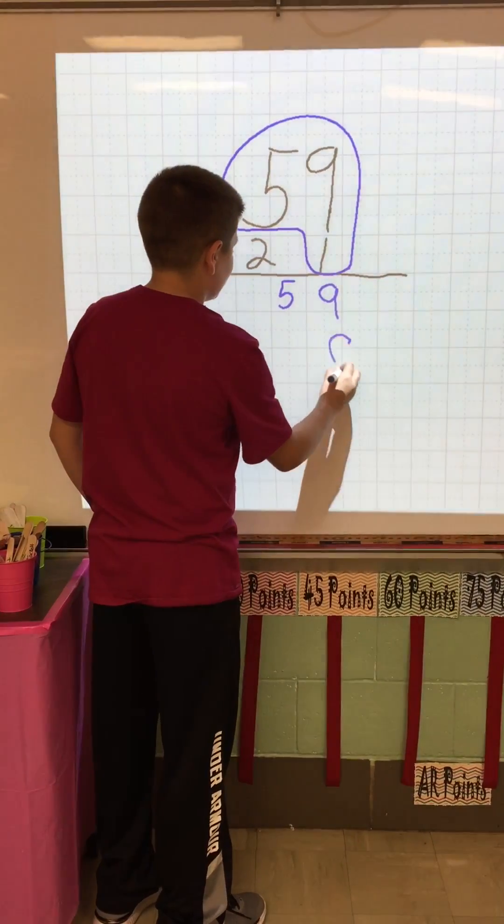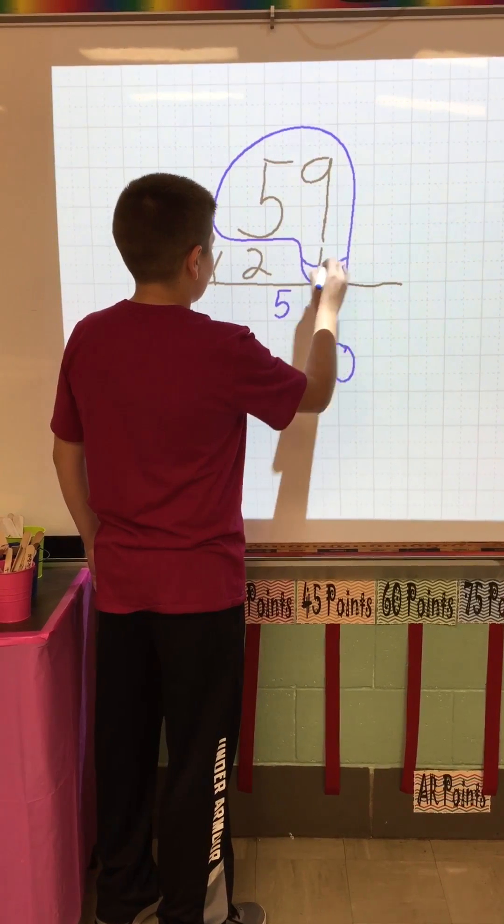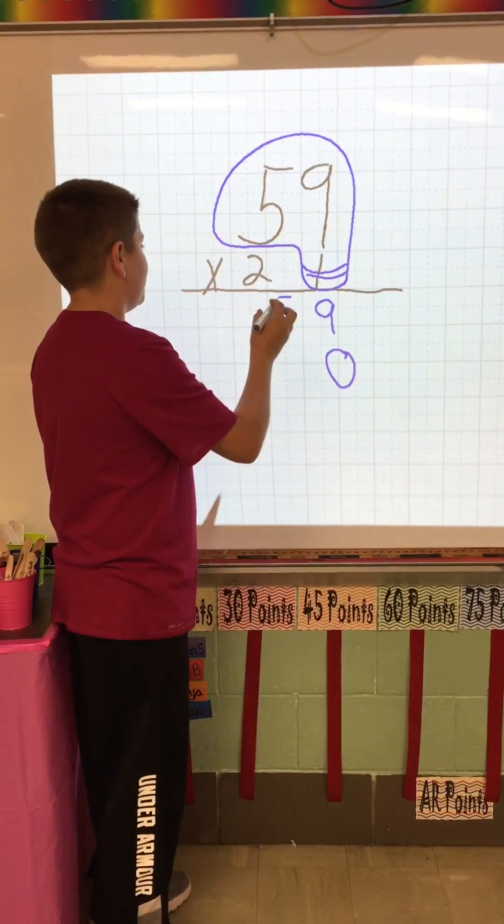So you draw a 0, put a color on the 1, and then you go for the 2.